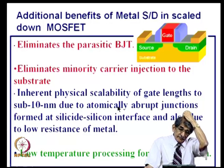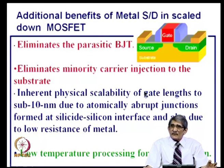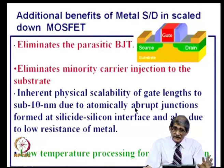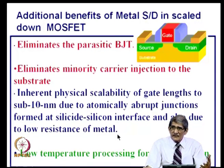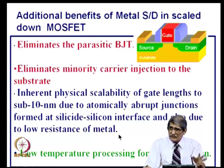You can use an atomically abrupt junction by using a metal on the surface, so all the limitations of shallow junctions are eliminated. Further, if you replace the junction with a metal semiconductor contact, your processing temperature goes down — you are just evaporating metal, and at most some annealing at about 400°C is needed. So the thermal budget on the wafer is reduced, which is very important for larger wafers: 8-inch or 12-inch wafers experience less warpage when processed at lower temperatures.